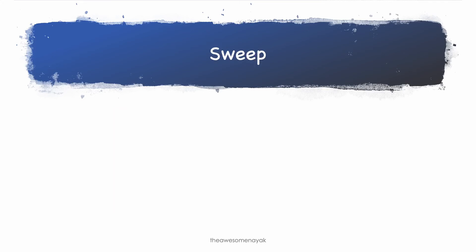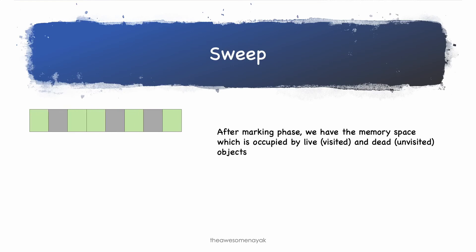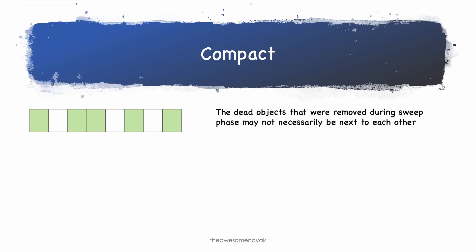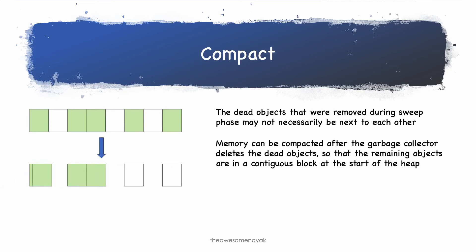Once the marking is done, the next phase is the sweep phase. After the marking phase, we have memory spaces occupied by live objects and dead objects. In the sweep phase, we release the memory fragments which contain these dead objects. After the sweeping or deletion of dead objects is done, we may also need to do some compacting. This is required because the dead objects removed during the sweep phase may not necessarily be next to each other, leaving gaps in the memory area — this can lead to fragmented memory space. Memory can be compacted after the garbage collector deletes the dead objects so that the remaining live objects are in a continuous block at the start of the heap. This is also known as defragmentation, and the compaction process makes it easier to allocate memory to new objects sequentially.